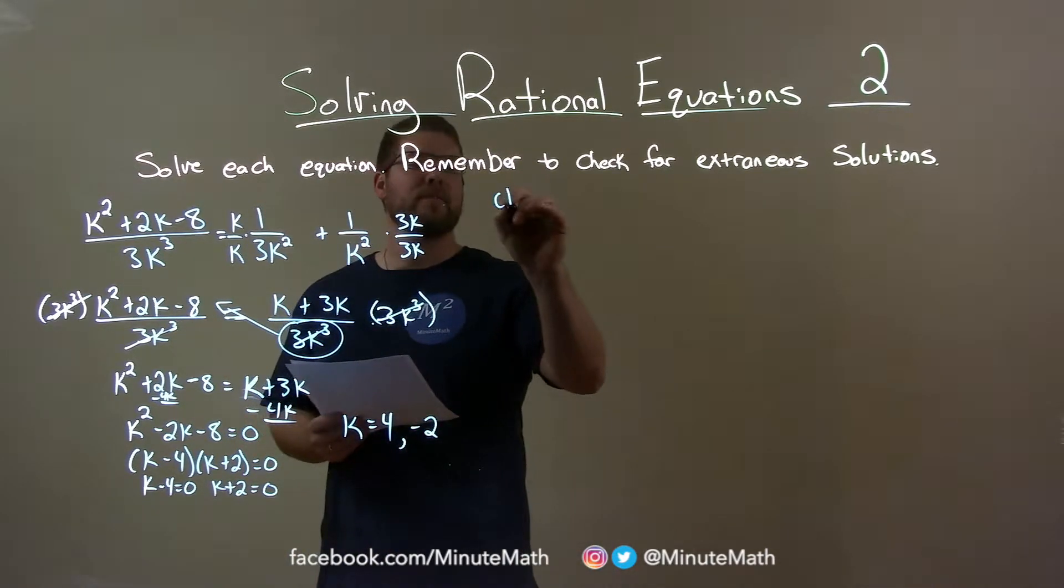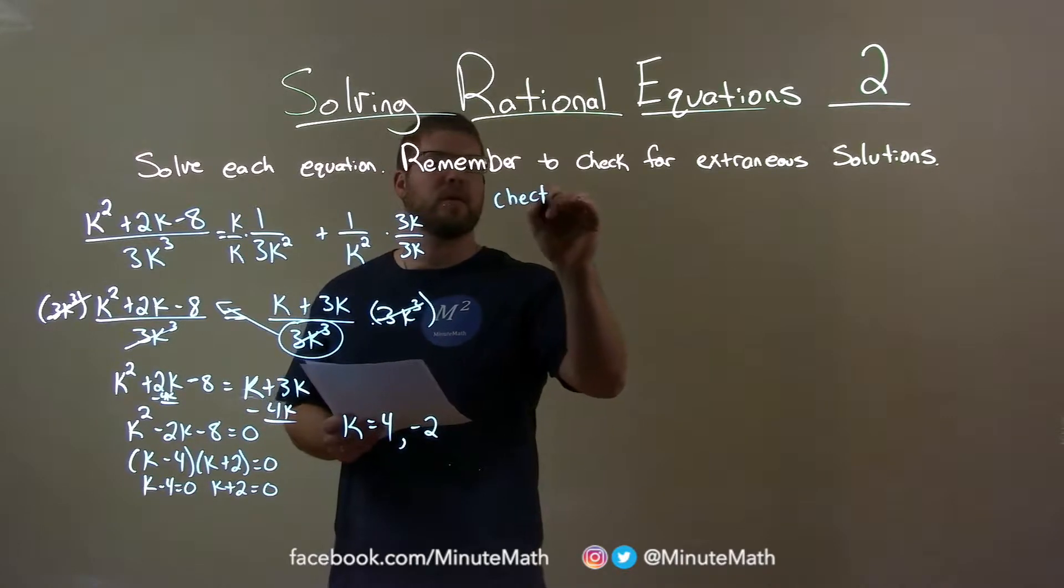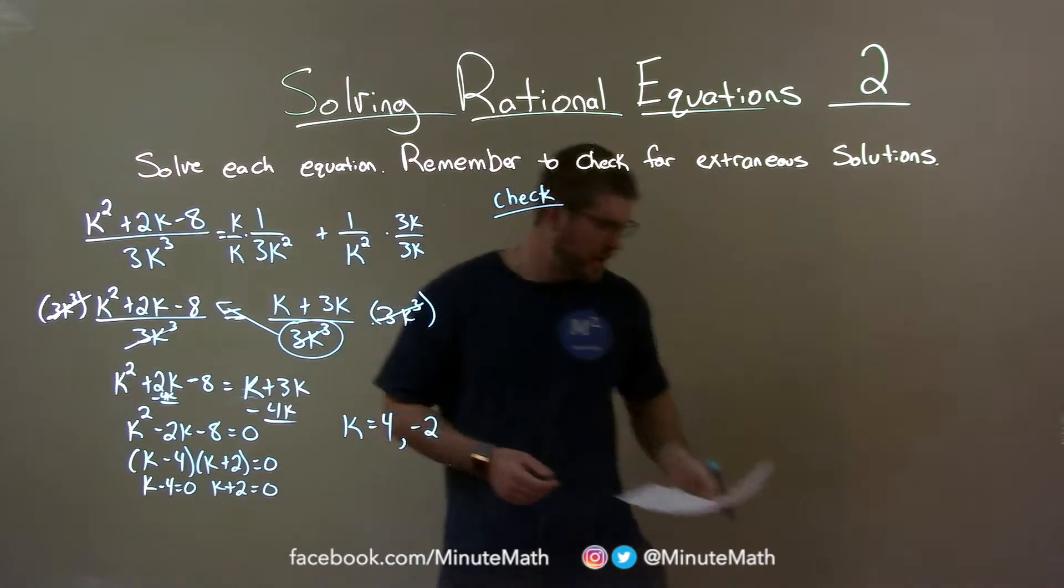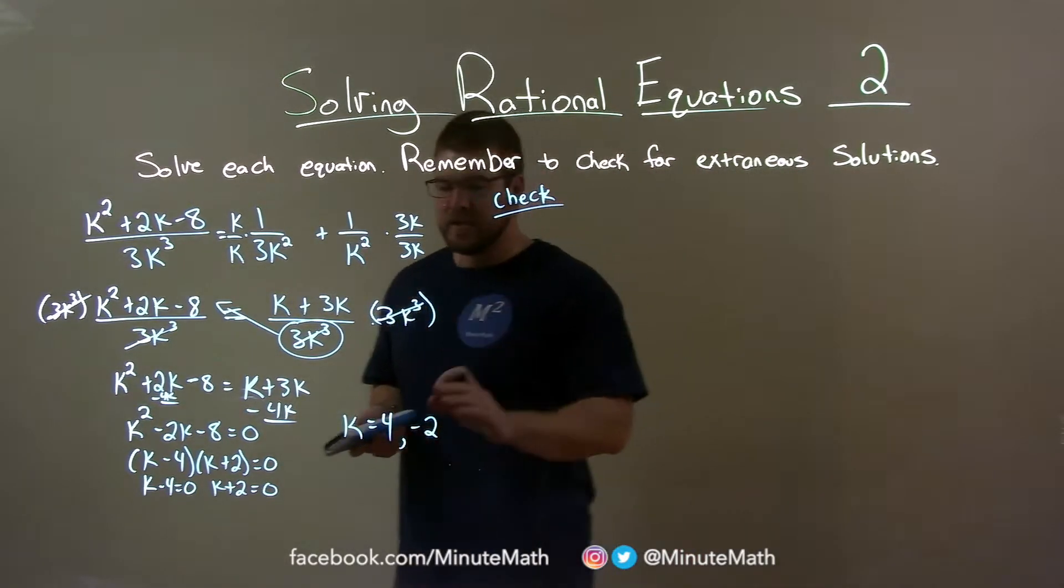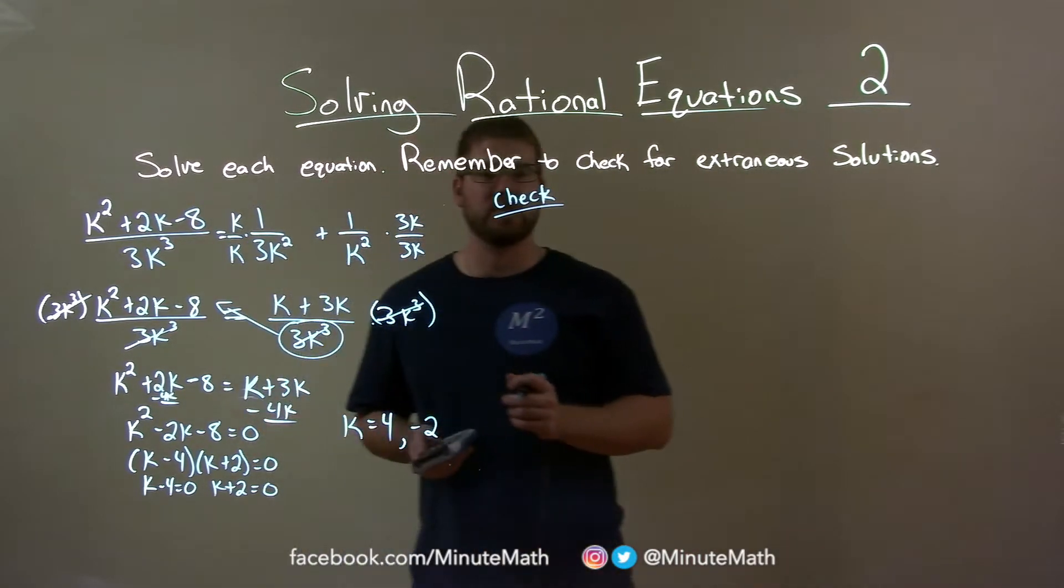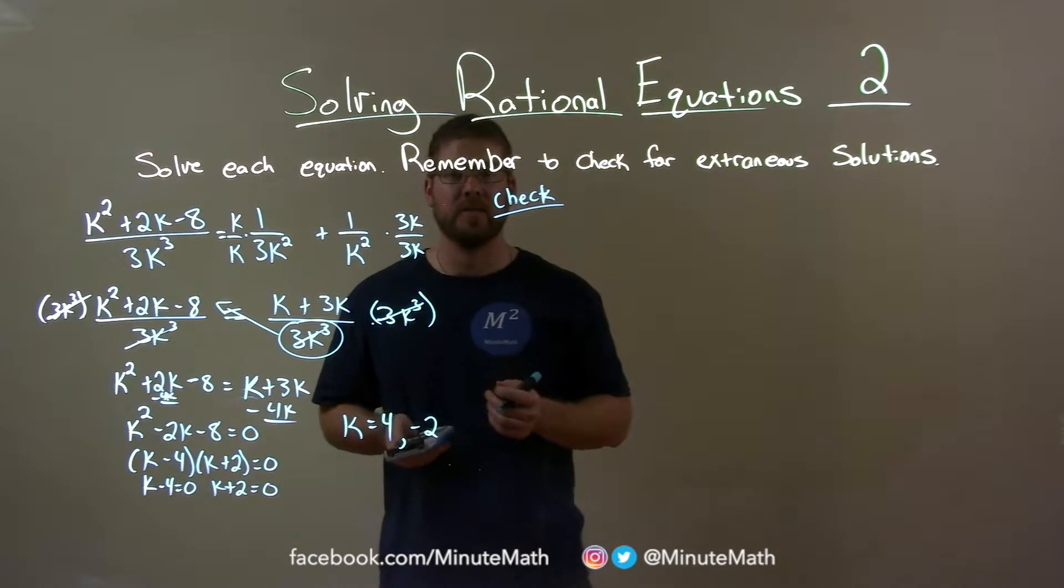But we told us that we have to check here. So we've got to make sure we check both of these. So to check here, what I'm going to do is I'm going to take each number individually, plug it to my original equation, and see if the left and right hand side are equal.